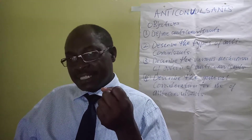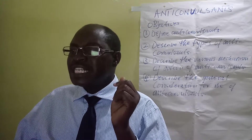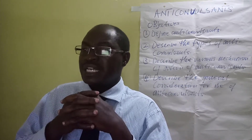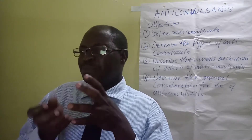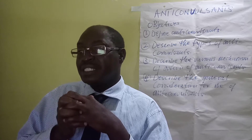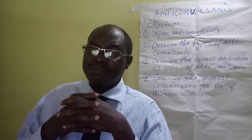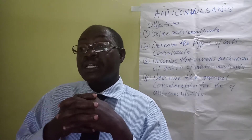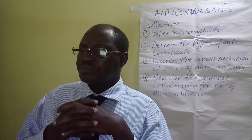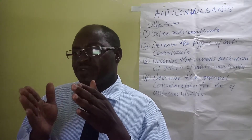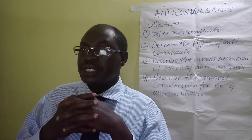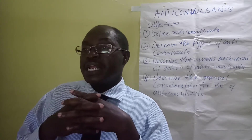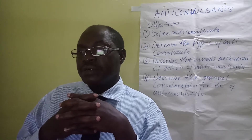The third mechanism involves anticonvulsants that inhibit the T-type calcium channel. These T-type calcium channels are present in the thalamus, and the thalamus is where absence seizures are generated. In case the T-type calcium channels are inhibited, then the absence seizures will not occur. Examples of such T-type calcium channel blockers are valproate (valproic acid) and ethosuximide.